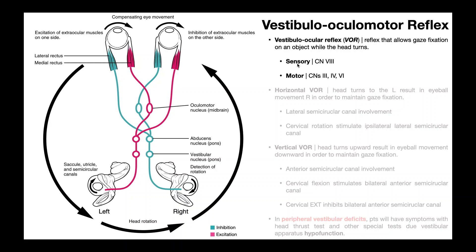The sensory component of the VOR is cranial nerve 8, or the vestibulocochlear nerve — more specifically the vestibular part of this nerve. The motor component of the VOR is cranial nerves 3, 4, and 6, which are the oculomotor nerve, trochlear nerve, and abducens nerve, respectively.